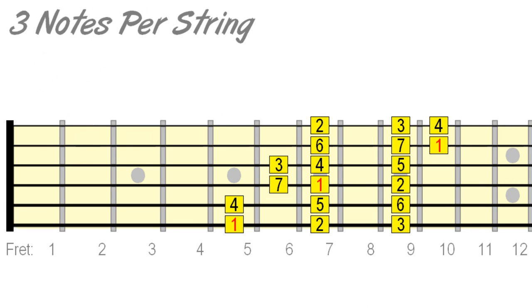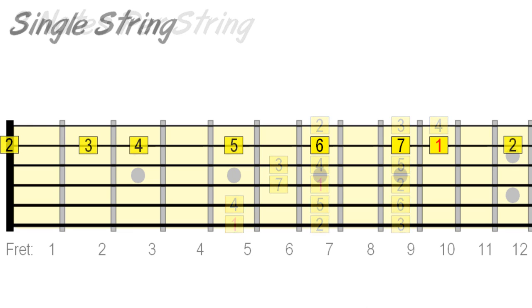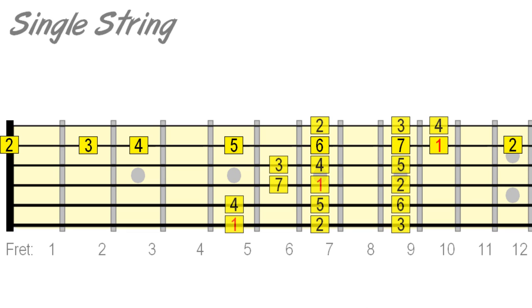Most of us are used to learning and playing scales through patterns spanning all 6 strings of the guitar, such as this 3 notes per string major scale pattern. But it's also important to be able to play confidently across one string to give your solos a mix of horizontal and vertical movement.